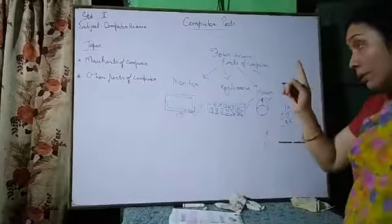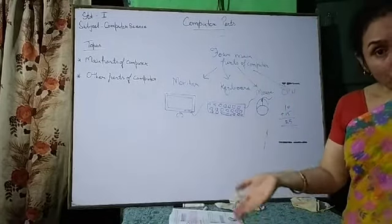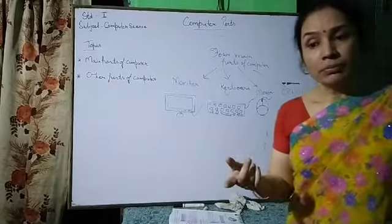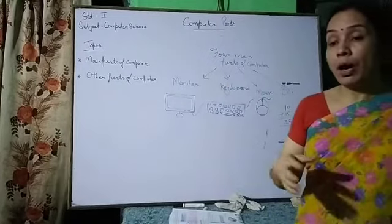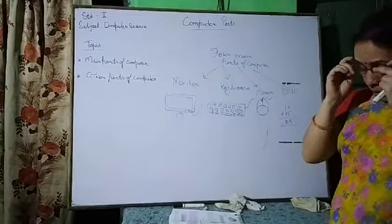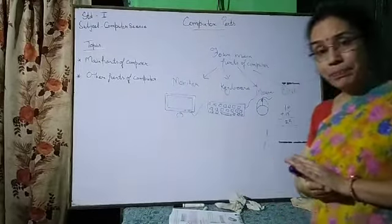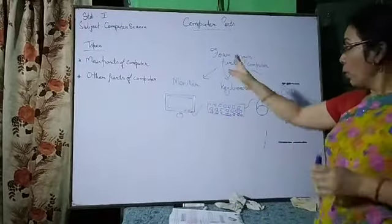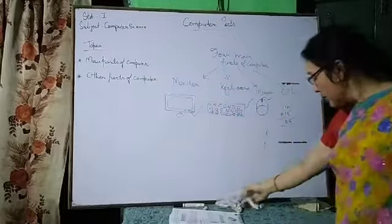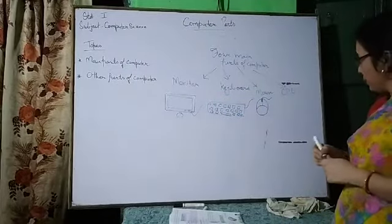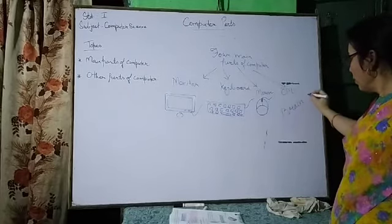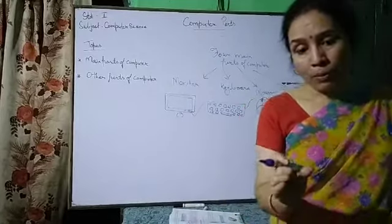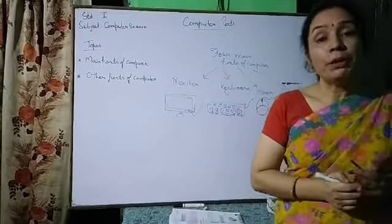Same thing happens in the computer. The CPU — central processing unit — controls all the parts of the computer. When you go to senior classes, I will teach you how it does that control. So CPU controls all the parts of the computer and does all the calculations. That is why CPU is called the brain of the computer. Though it is a very small part always kept inside the CPU box, it is a very important part of the computer.